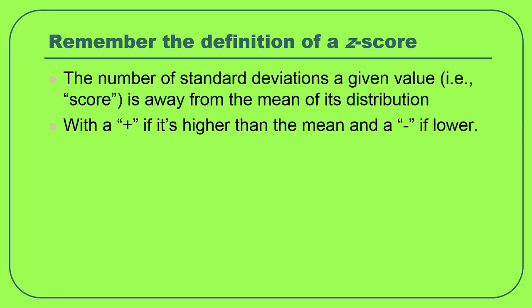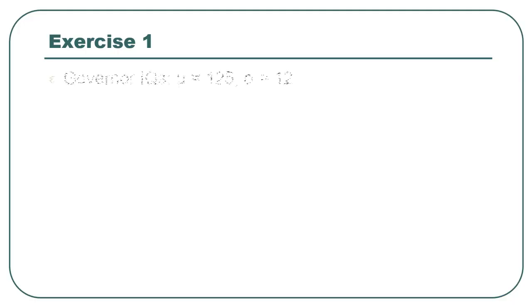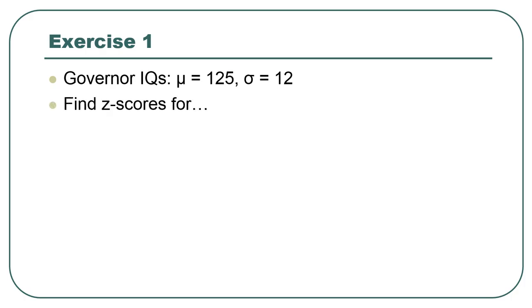If there's a plus, that means the score is higher than the mean. If there's a minus, it's lower than the mean. Let's imagine that governors of states in the United States have a mean IQ of 125 — which is a ridiculously high mean — and a standard deviation of 12, which is a little less than the overall population. Find the z-scores for the following people.